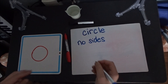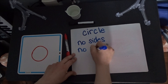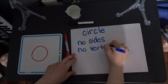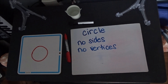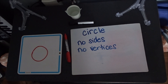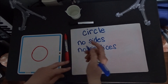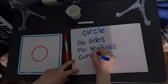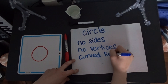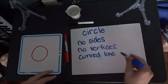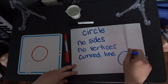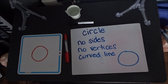So our circle has no sides and no vertices. What kind of line does it have — straight lines or curved lines? If you said curved, you are right! It's just one continuous curved line all the way around.